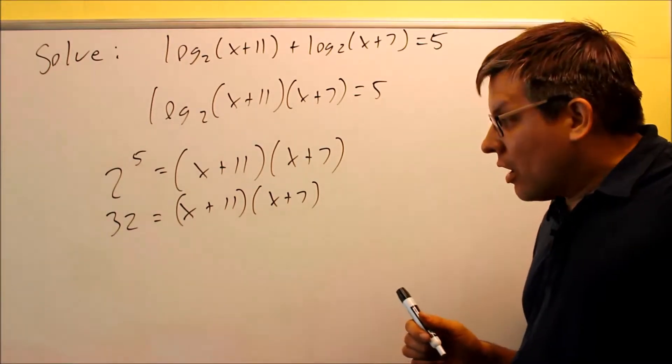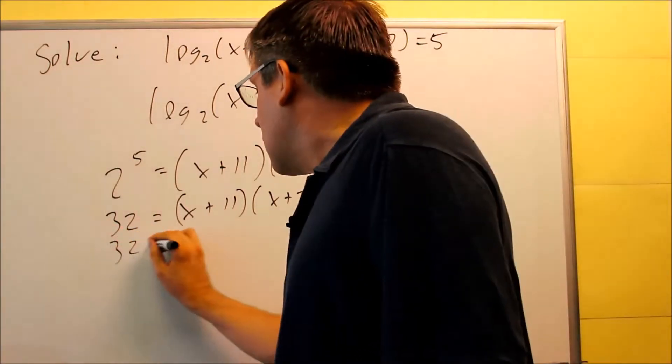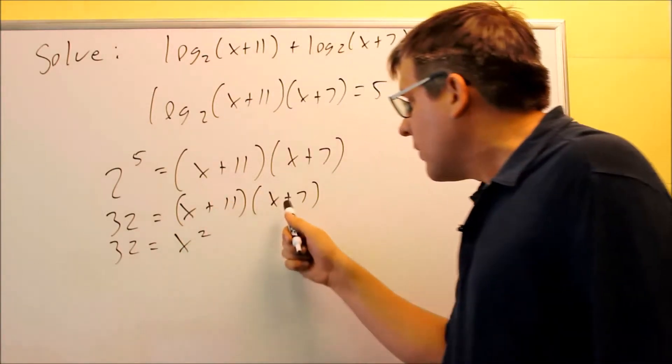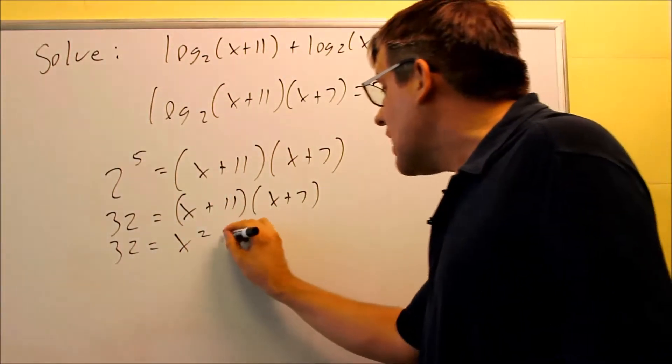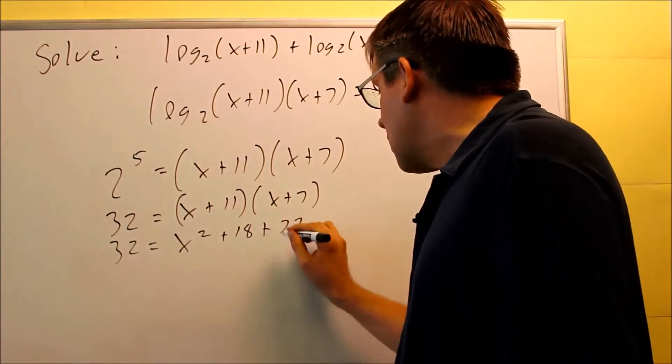And then factor it and get our answer. So I have thirty-two is going to equal x squared, I get 7x and 11x is 18x plus seventy-seven.